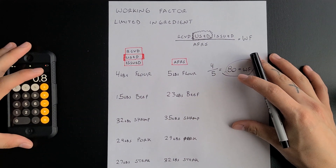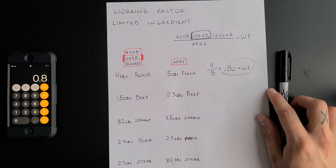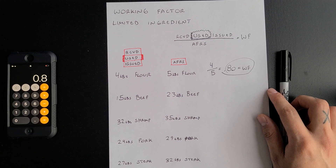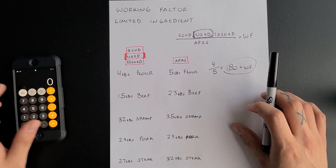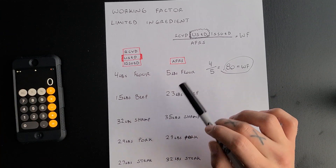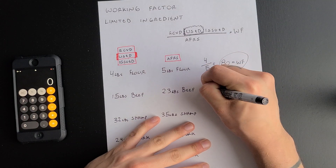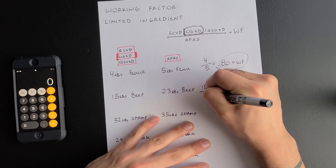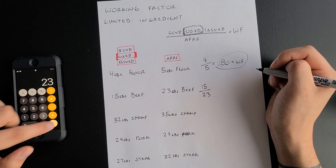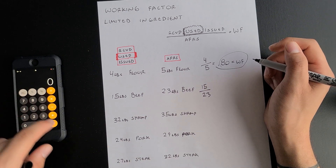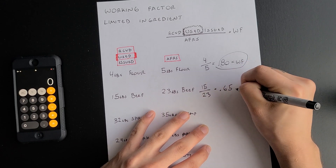You could pause the video right now and start working on the rest of them. Moving on — same formula with the rest of these: your used divided by your AFRS, what the recipe calls for. So 15 divided by 23 equals 0.65. That is the working factor.